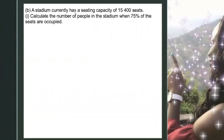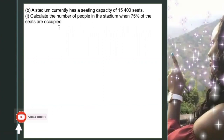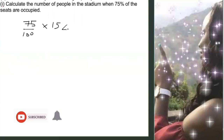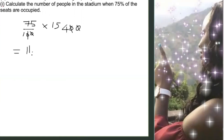Looking at this worded question: a stadium currently has a seating capacity of 15,400 seats. Calculate the number of people in the stadium when 75% of the seats are occupied. We're going to take 75% of 15,400, so we have 75 over 100 times 15,400. The zeros cancel, so we multiply 75 times 154, which gives us 11,550 persons.